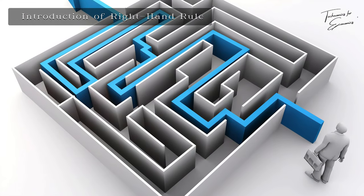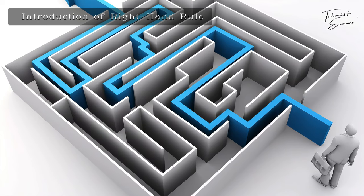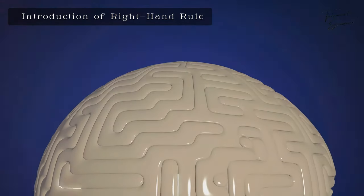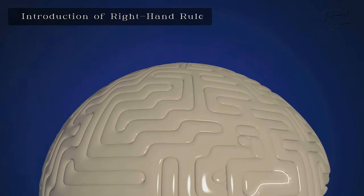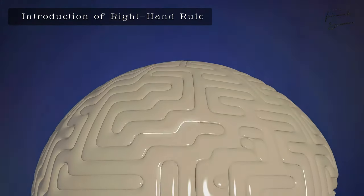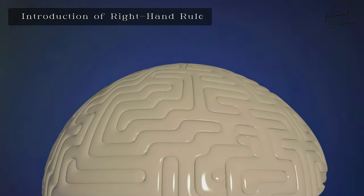The right hand rule is one of the simplest and most effective methods for solving mazes. By keeping your right hand in constant contact with the wall, you can navigate through the maze without getting lost. This technique ensures that you will eventually find the exit, making it a reliable strategy for maze solving.